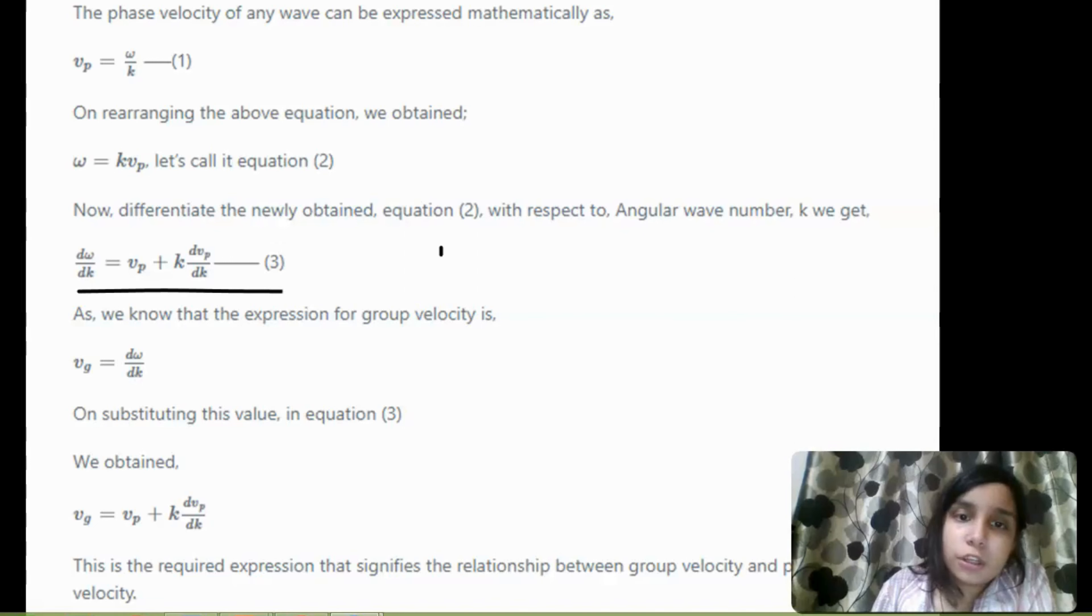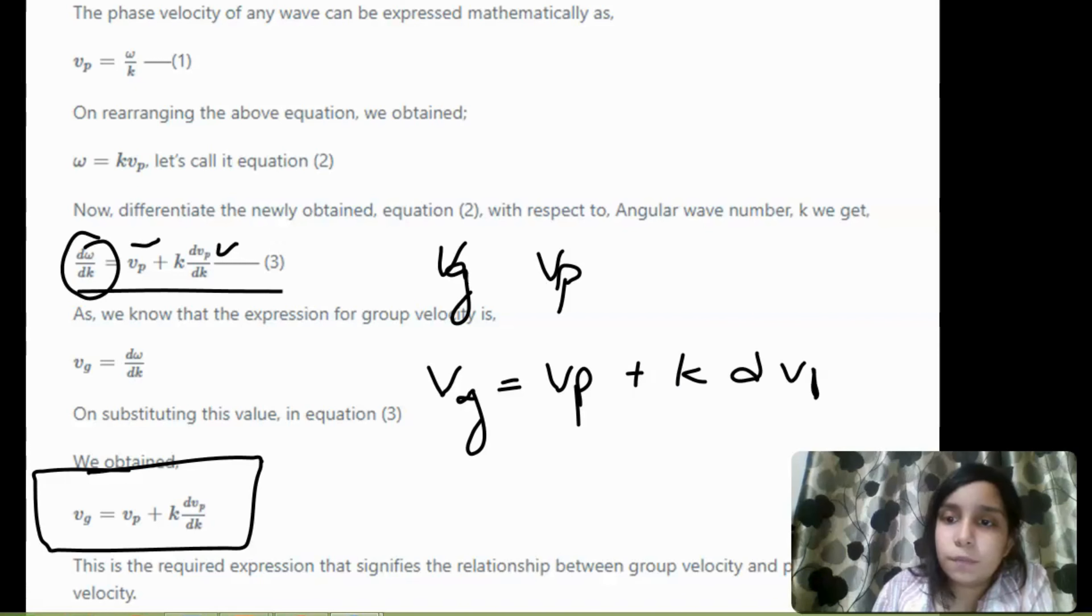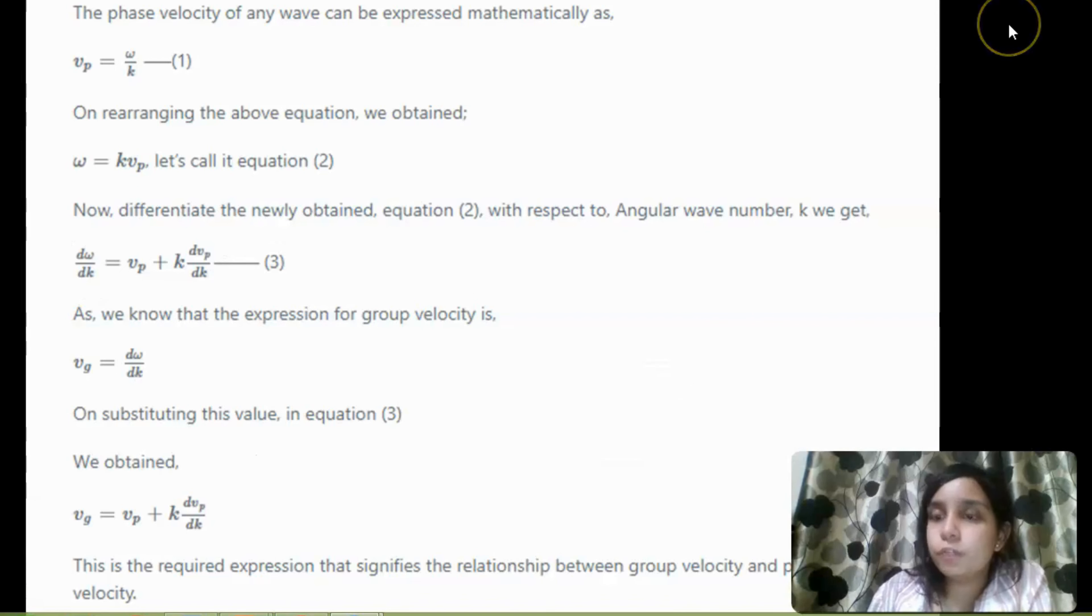So, now, we need the relation between vg and vp. So, we need the relation between vp and vg, which is your phase velocity and group velocity.